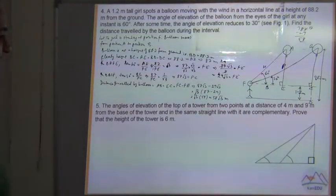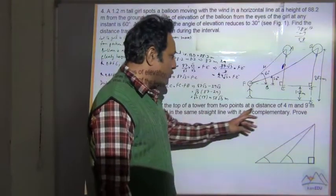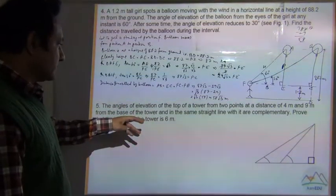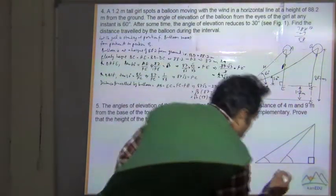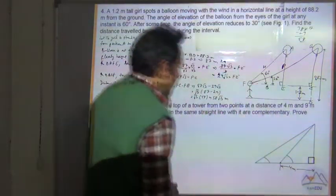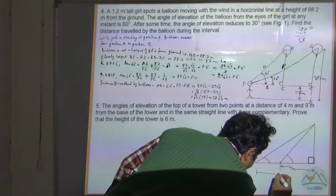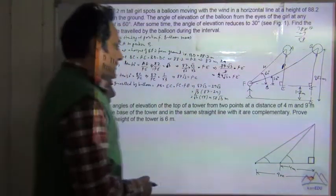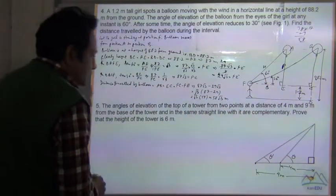Question number 5. The angle of elevation of the top of a tower from two points at a distance of 4 meters and 9 meters from the base of the tower and in the same straight line are complementary. So this point is at 4 meters and the other is at 9 meters, and the two angles are complementary — say theta and theta dash.